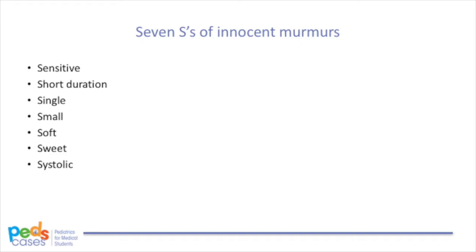Sensitive means that the murmur changes with position or respiration. Short duration means that the murmur is not pansystolic. Single means that there are no clicks or gallops. Small means that the murmur is limited to a small area and is non-radiating. Soft means the murmur is of low intensity. Sweet means that the murmur is not harsh in quality. And systolic means that the murmur is limited to systole. Remember, diastolic and pansystolic murmurs are always pathological, whereas systolic ejection murmurs may or may not be pathological.